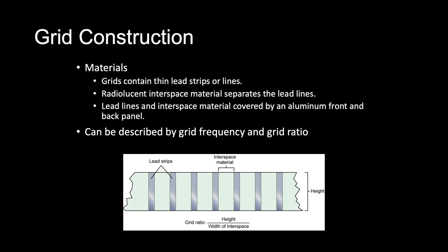Grid ratio ranges from 4 to 1 to 16 to 1. High ratio grids remove or clean up more scatter radiation than lower ratio grids and further increase the radiographic contrast. As grid ratio increases for the same grid frequency, scatter cleanup improves and radiographic contrast increases. As grid ratio decreases for the same grid frequency, scatter cleanup is less effective and radiographic contrast decreases.